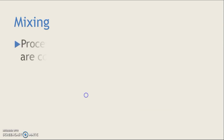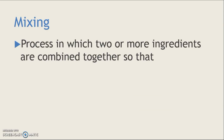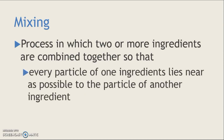So what is mixing? Mixing is a process in which two or more ingredients are combined together so that every particle of one ingredient lies as near as possible to the particle of another ingredient. For mixing to be considered uniform, one particle of one ingredient must lie as near as possible to the particle of another ingredient.